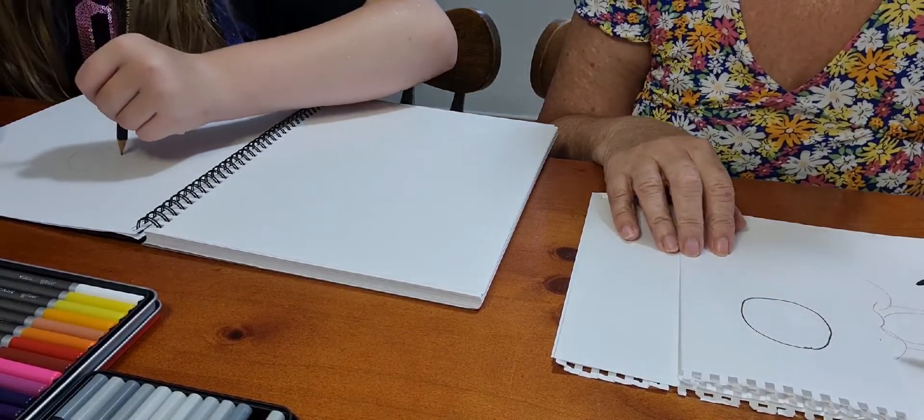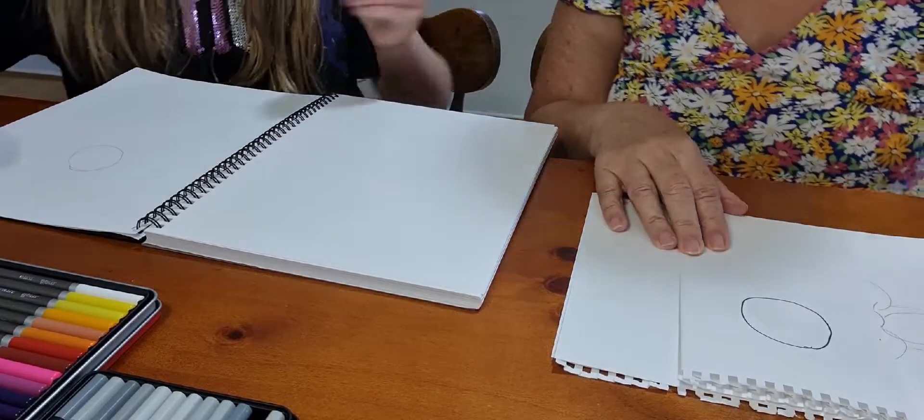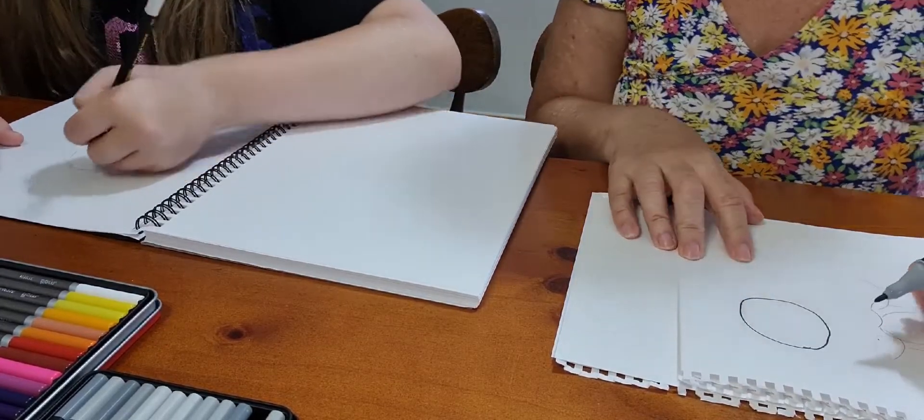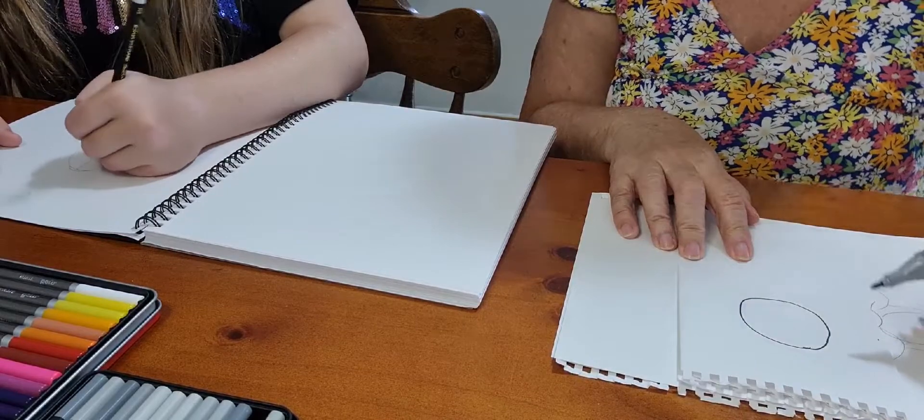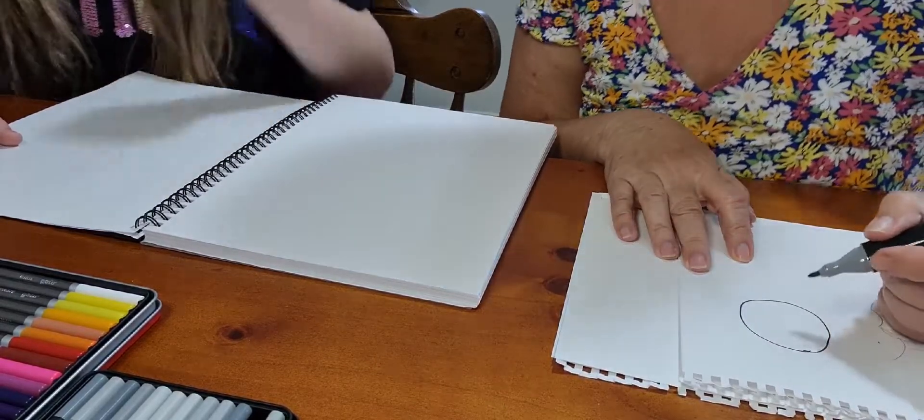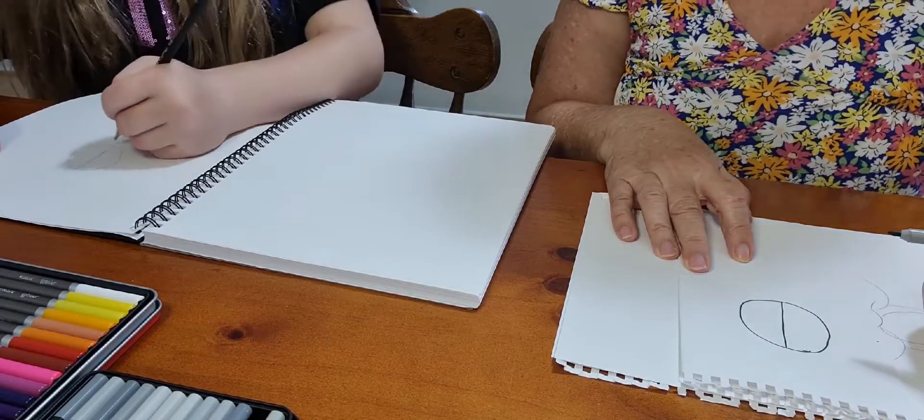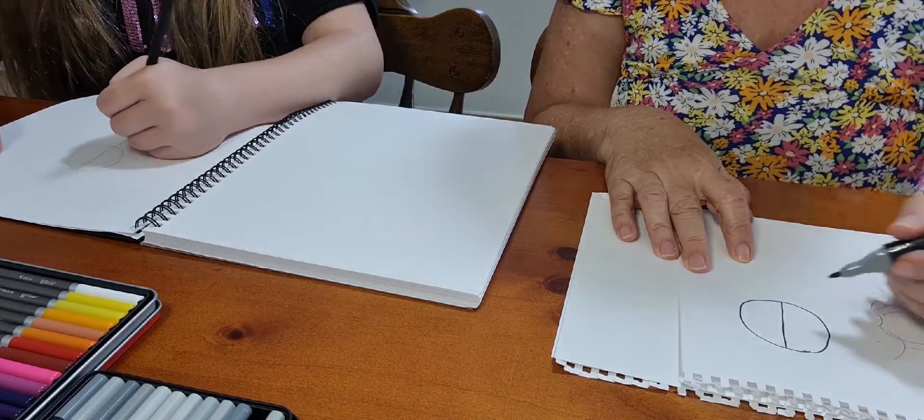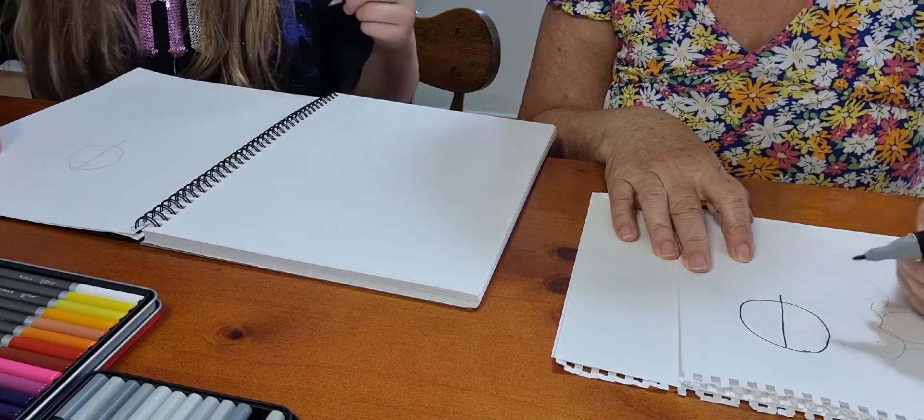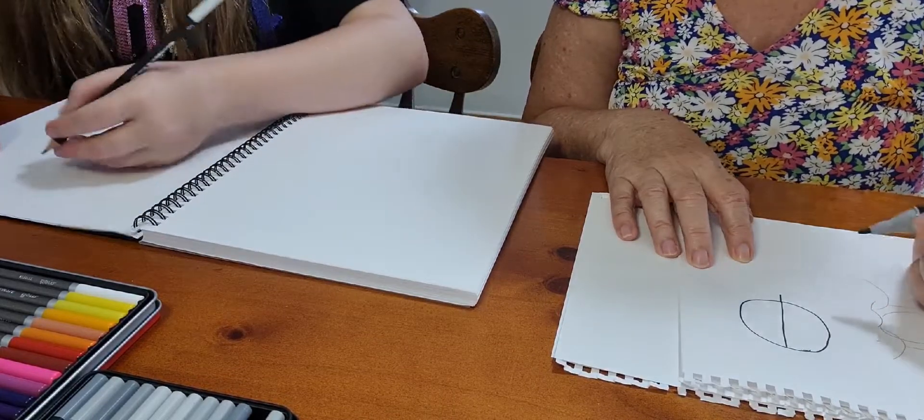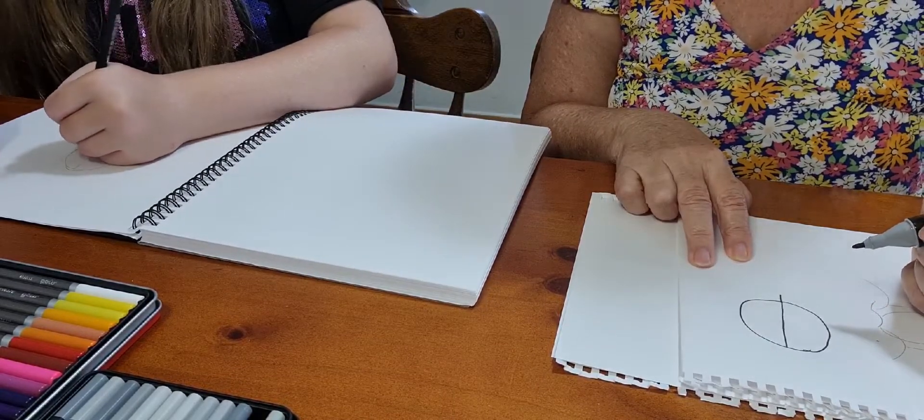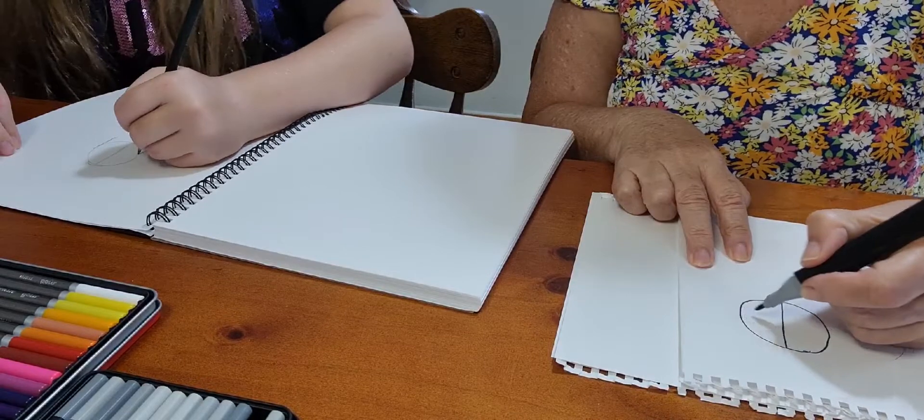Okay, once you have your circle, you're going to draw a line straight going down. Go out of that circle, then straight down. And then you're going to have a little extension at the bottom.